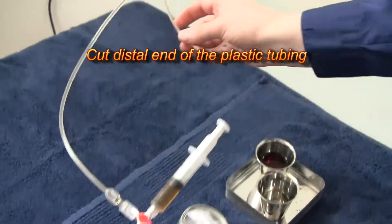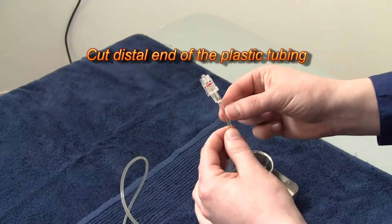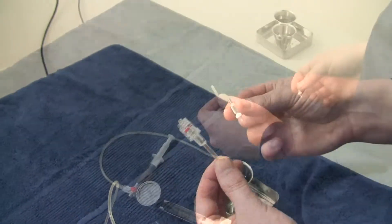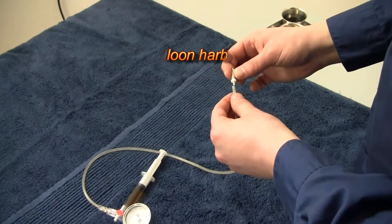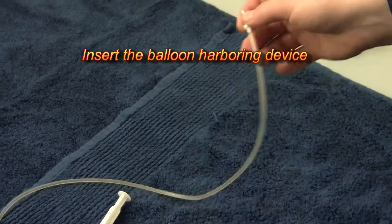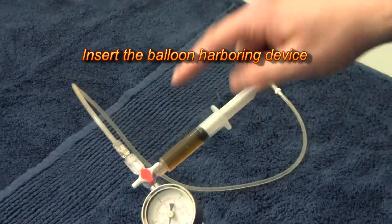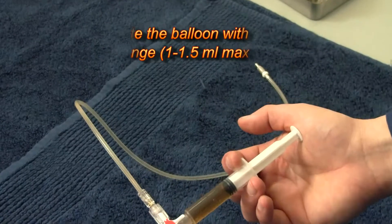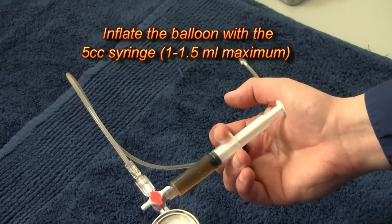Now cut the distal end of the tubing and connect to the balloon harboring device. Once the balloon harboring device is connected, you must check the balloon's integrity by inflating it with one to one and a half milliliters of contrast fluid.